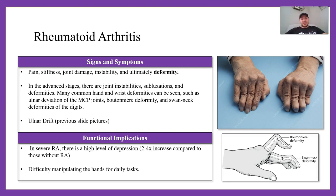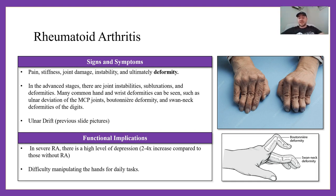Signs and symptoms of RA: pain, stiffness, joint damage, instability, and ultimately deformity. Ulnar drift is what we talked about. There are two types of finger deformities that are very common: a boutonniere deformity and a swan neck deformity. Boutonniere reminds me of trying to button a shirt — that's how the finger looks. Swan neck looks like a swan's neck. A good test question: what joints are flexed and what joints are extended in each?